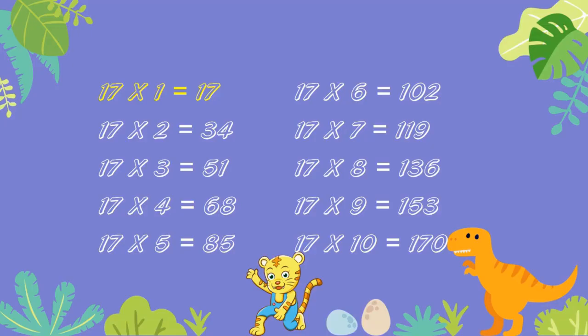17 ones are 17. 17 twos are 34. 17 threes are 51. 17 fours are 68. 17 fives are 85. 17 sixes are 102. 17 sevens are 119. 17 eights are 136. 17 nines are 153. 17 tens are 170.